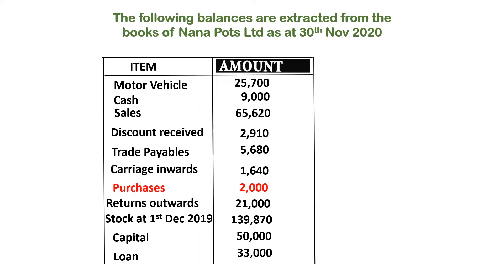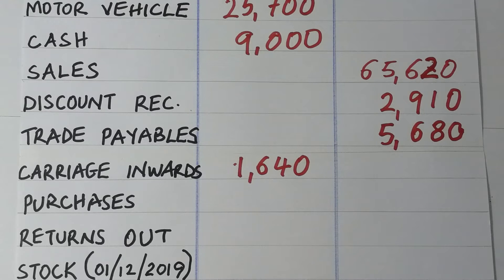Then we have purchases. Purchases are when you buy goods that you intend to resell. Purchases increase the amount of stock in the business, and increases in stock are debited. Stock being an asset means assets have debit balances, so purchases will also have a debit balance and the value of purchases is posted on the debit side.